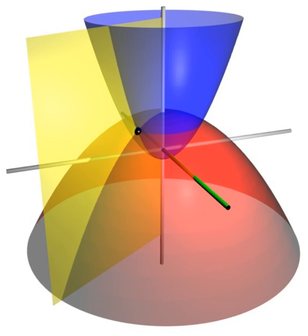There are two common methods for extending the polar coordinate system to three dimensions. In the cylindrical coordinate system, a z coordinate with the same meaning as in Cartesian coordinates is added to the r and θ polar coordinates, giving a triple (r, θ, z). Spherical coordinates take this a step further by converting the pair of cylindrical coordinates (r, z) to polar coordinates (ρ, φ), giving a triple (ρ, θ, φ).